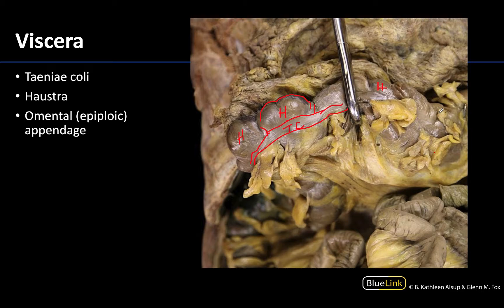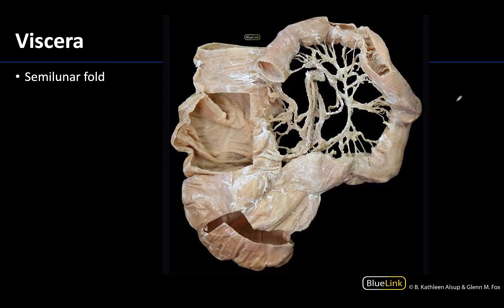Additionally, throughout the large intestine you will see little pockets of what appears to be fat — I'm labeling a few here — and these are referred to as the omental or epiploic appendages, which are fat-filled outpouchings of the peritoneum. So there are three really characteristic things when talking about the large intestine: teniae coli, haustra, and epiploic appendages. Internally, the semilunar folds are located on the internal surface of the colon in the place of the externally visible haustra. Unlike the circular folds of the small intestine, the semilunar folds do not form complete rings.